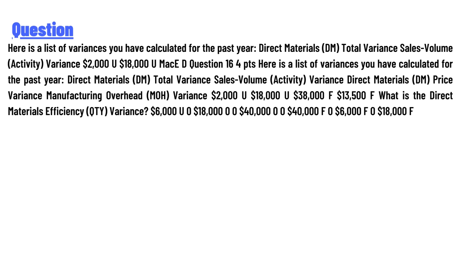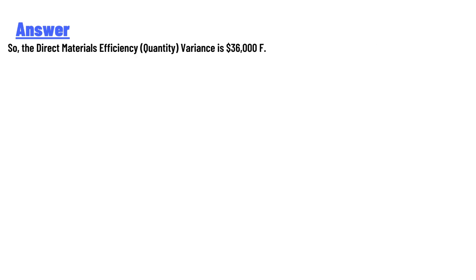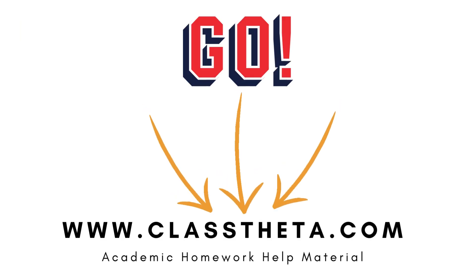The Direct Material efficiency quantity variance is $36,000 F. Thank you for watching the video.